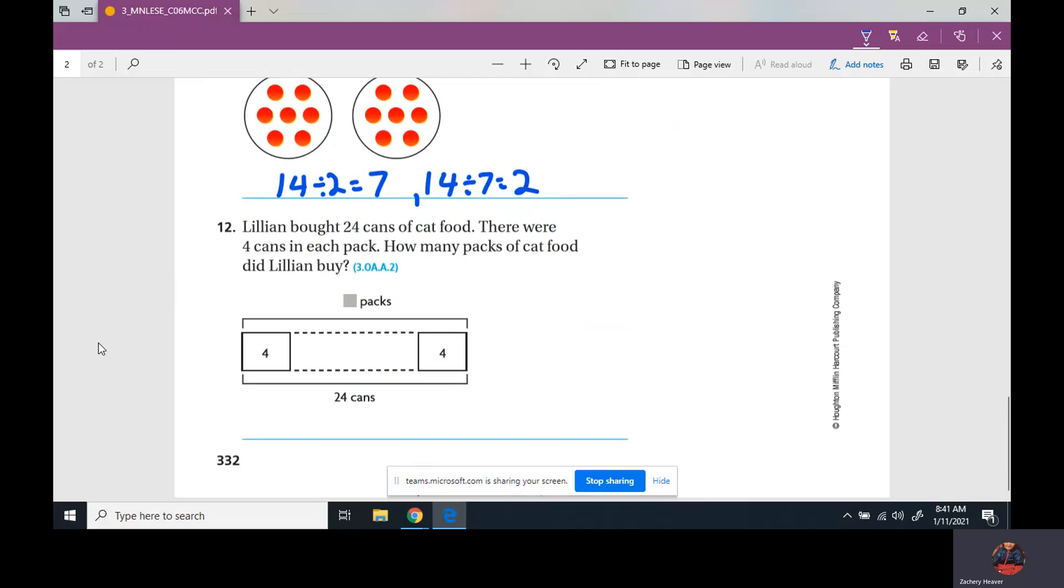Last one. Lily bought 24 cans of cat food. There were four cans in each pack. How many packs were there? So four, eight, twelve, sixteen, twenty, twenty-four. So now how many blocks do we have? We have one, two, three, four, five, six. Six packs were in that can. So it's as simple as that. I had eight in there already, so four, eight, twelve, sixteen, twenty, twenty-four. You got to count up. Use multiplication chart, or you could have simply done this: twenty-four divided by four equals six.